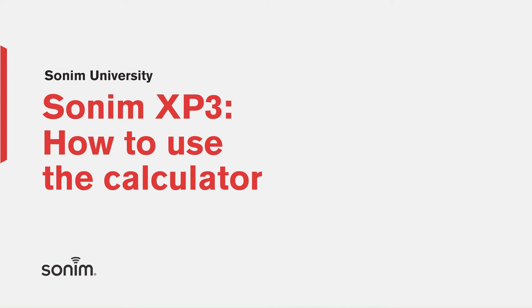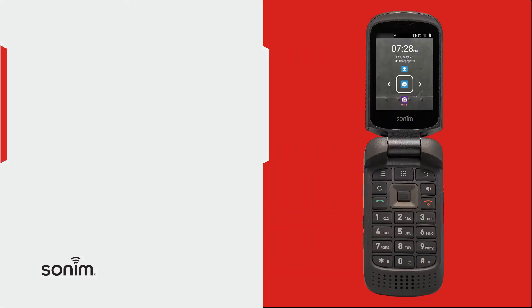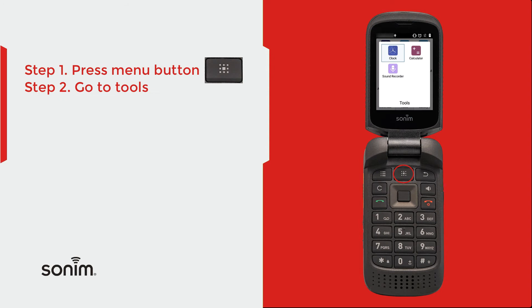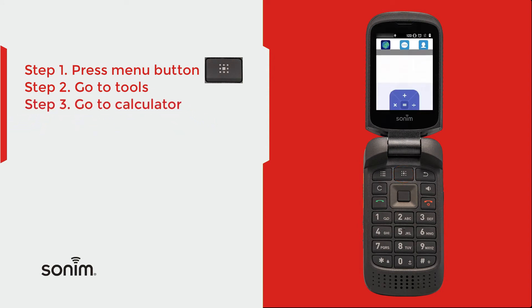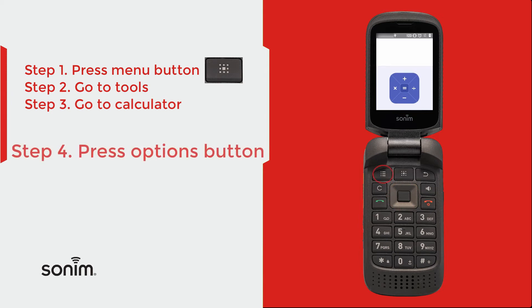To use the calculator from the home screen, select Menu, Tools, and Calculator. From there, you'll use your keypad to enter the numbers and the navigational wheel for the corresponding mathematical operators that are listed on the screen.